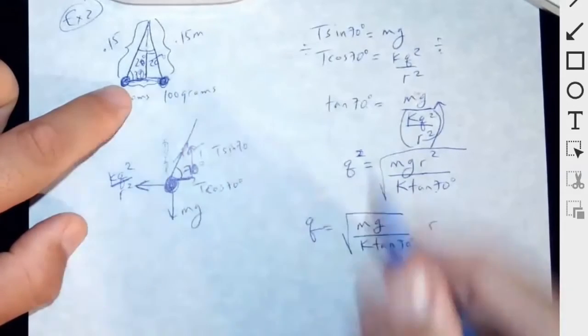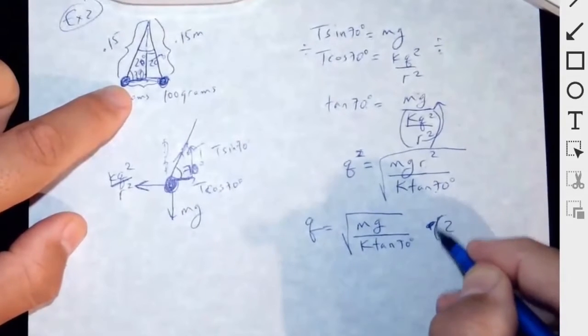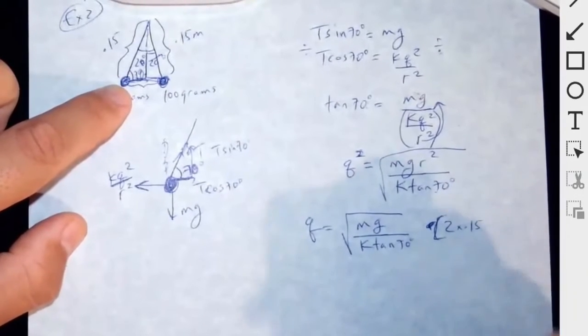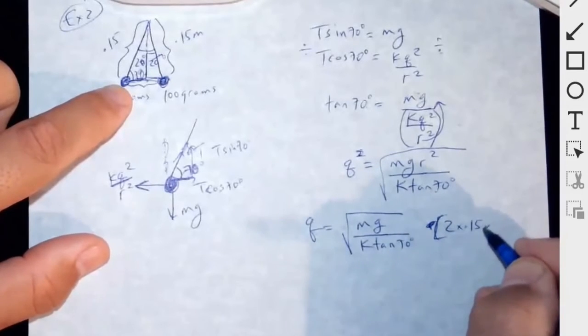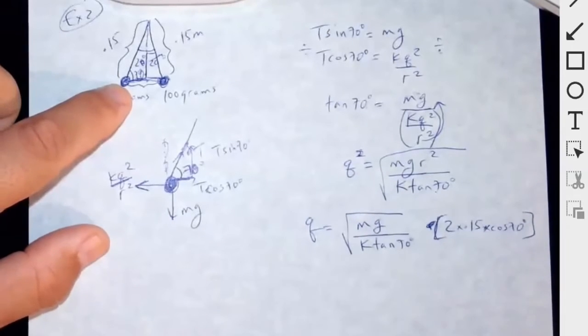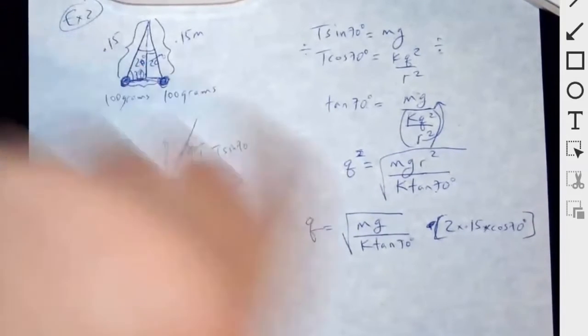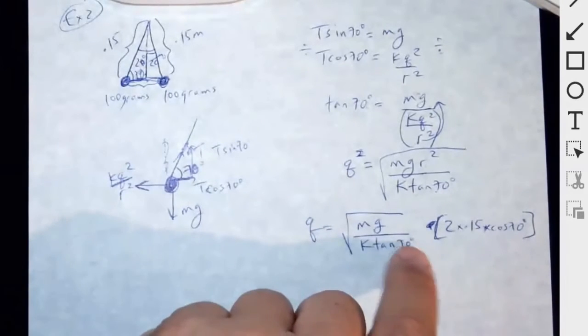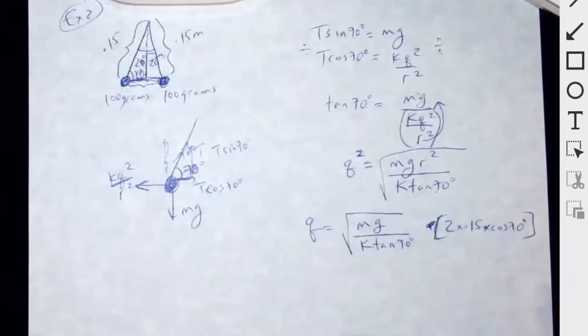2 times 0.15 times cosine of 70. Or you could say sine of 20. I'm just keeping it at 70 just so that you can see that I'm using both 70 right here. But you could do 2 times 0.15 sine of 20.